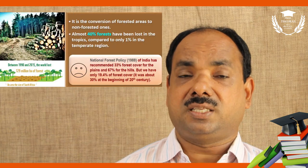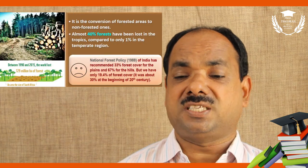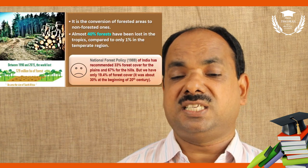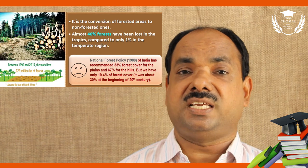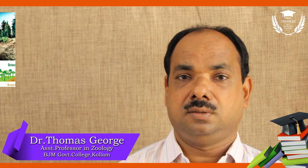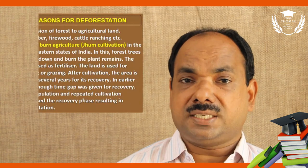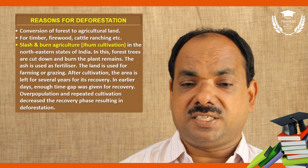India recommends 33% forest cover in the plains and 67% in the hills, as per the National Forest Policy 1988. Slash and burn cultivation is called Jhum cultivation.